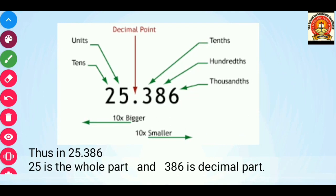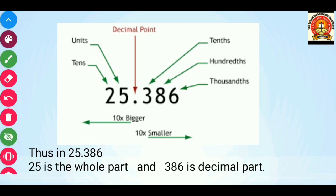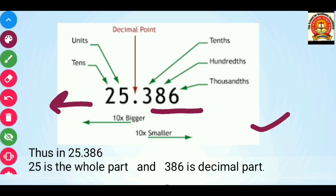You can see in this example 25.386. Here, 25 is the whole number part and 386 represents the decimal part. The digits to the right-hand side of the decimal point are: 3 is at the 10th place, 8 is at the 100th place, and 6 is at the 1000th place. In the same way, moving to the left-hand side: 5 is at the units place and 2 is at the 10th place. That is why we call it the decimal number system, or base 10 number system.